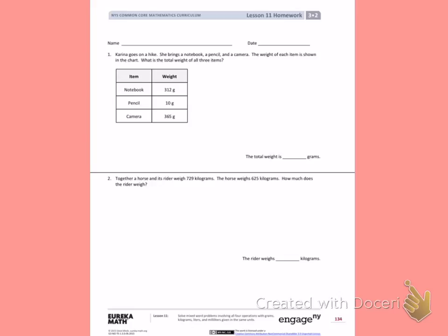Number 1. Karina goes on a hike. She brings a notebook, a pencil, and a camera. The weight of each item is shown in the chart. What is the total weight of all three items?